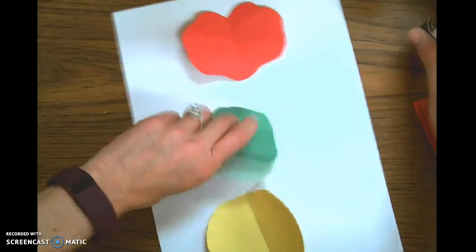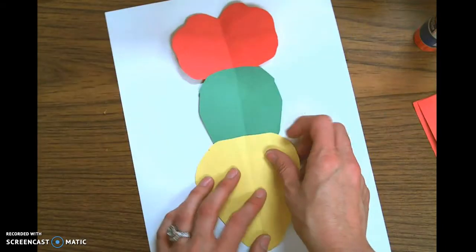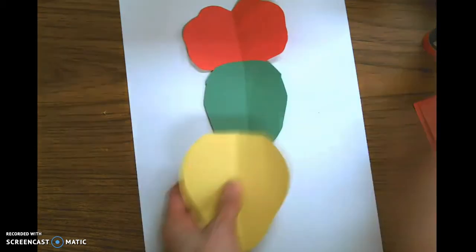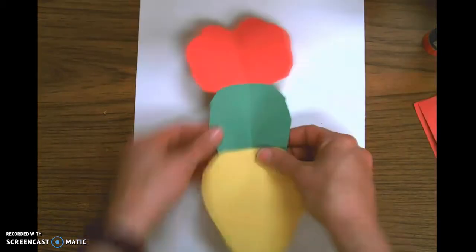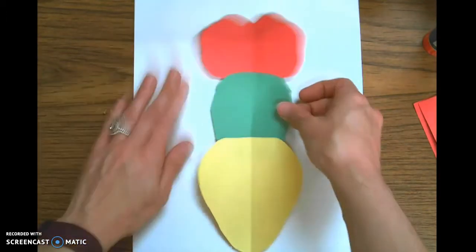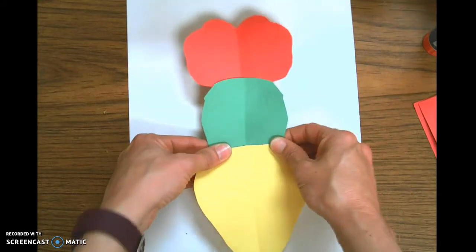Next I'm going to glue on the bottom part which is the abdomen, and I'm not going to glue them down to my background paper yet. I'm just using this to make sure that everything fits on the paper. I'm going to leave it just like that so that I can glue legs underneath here next.